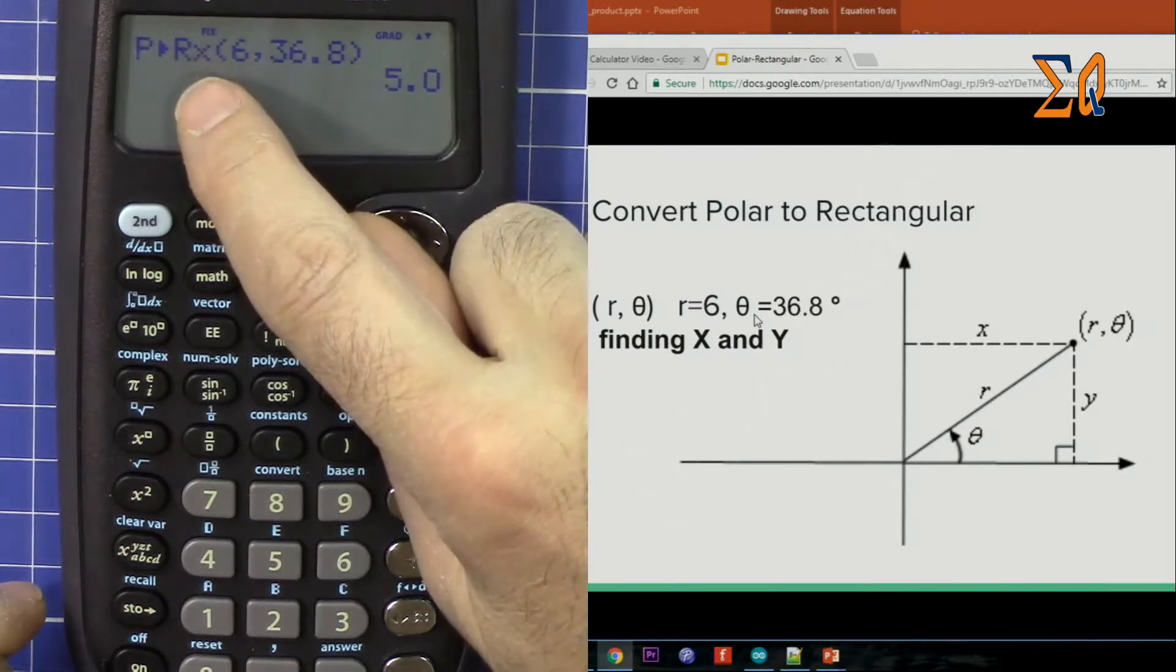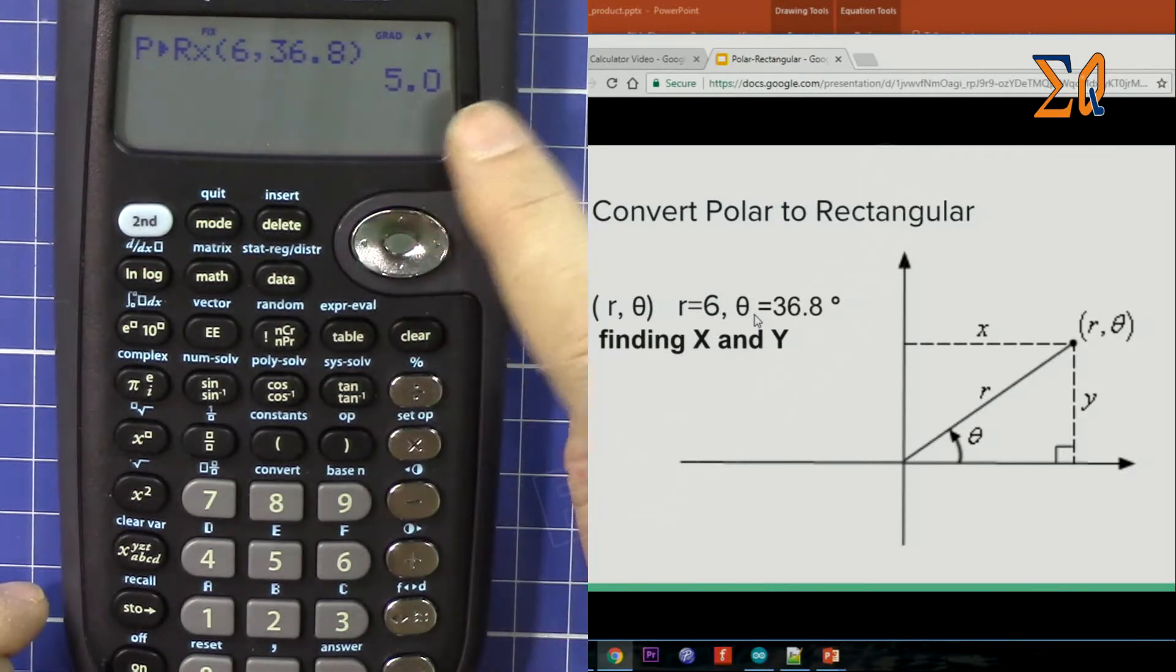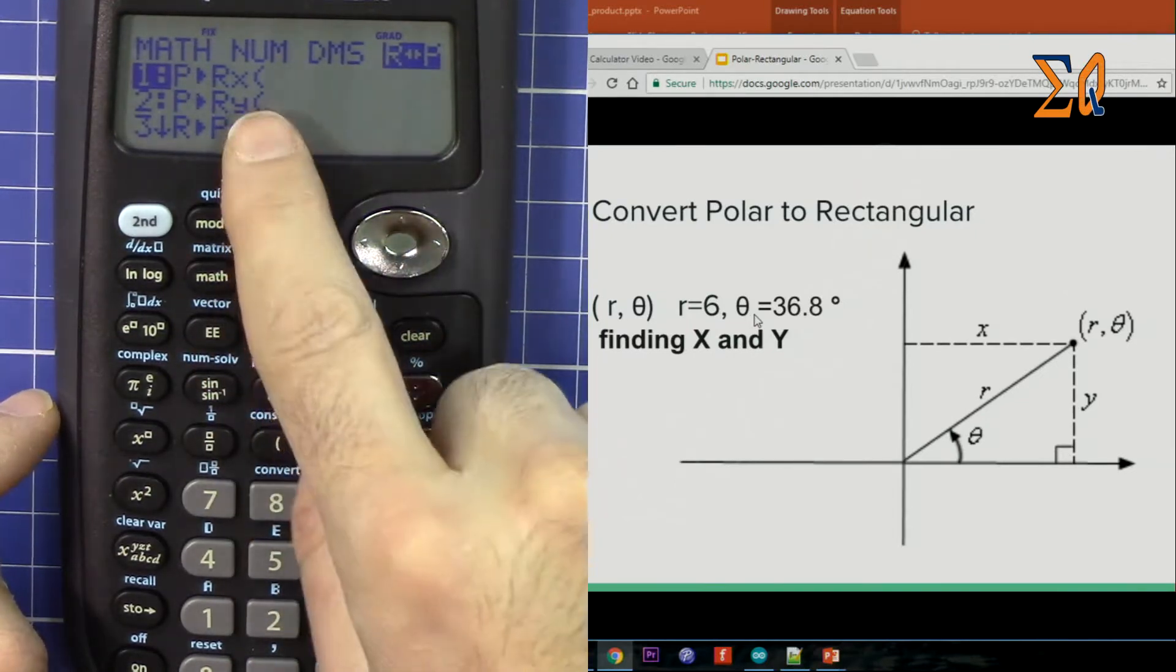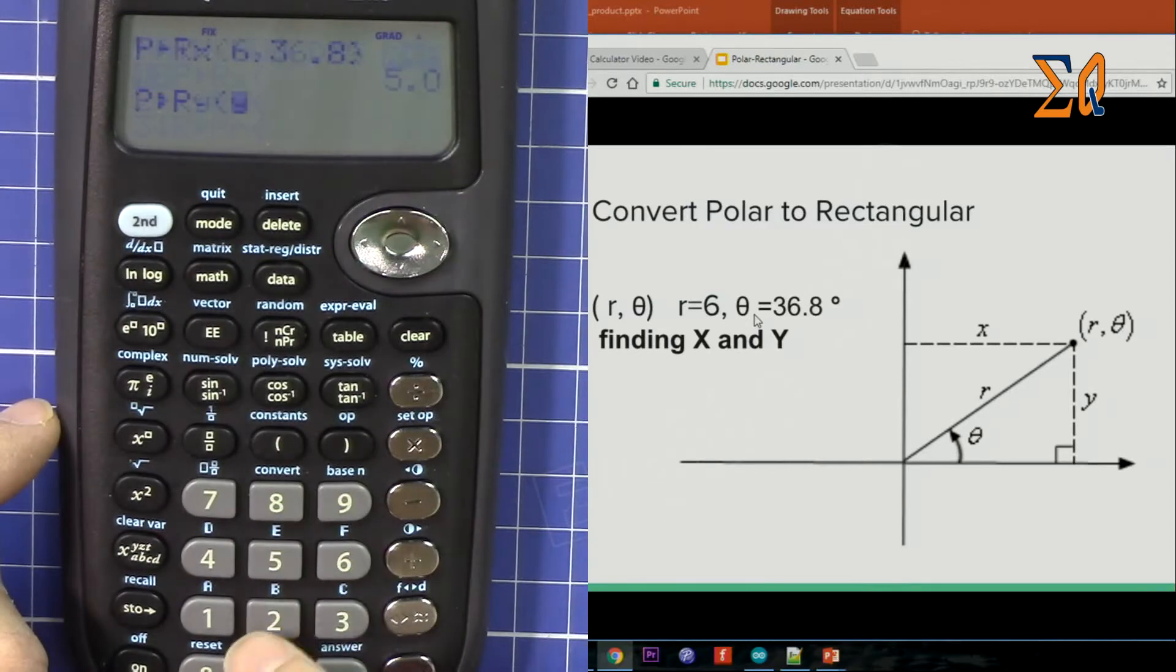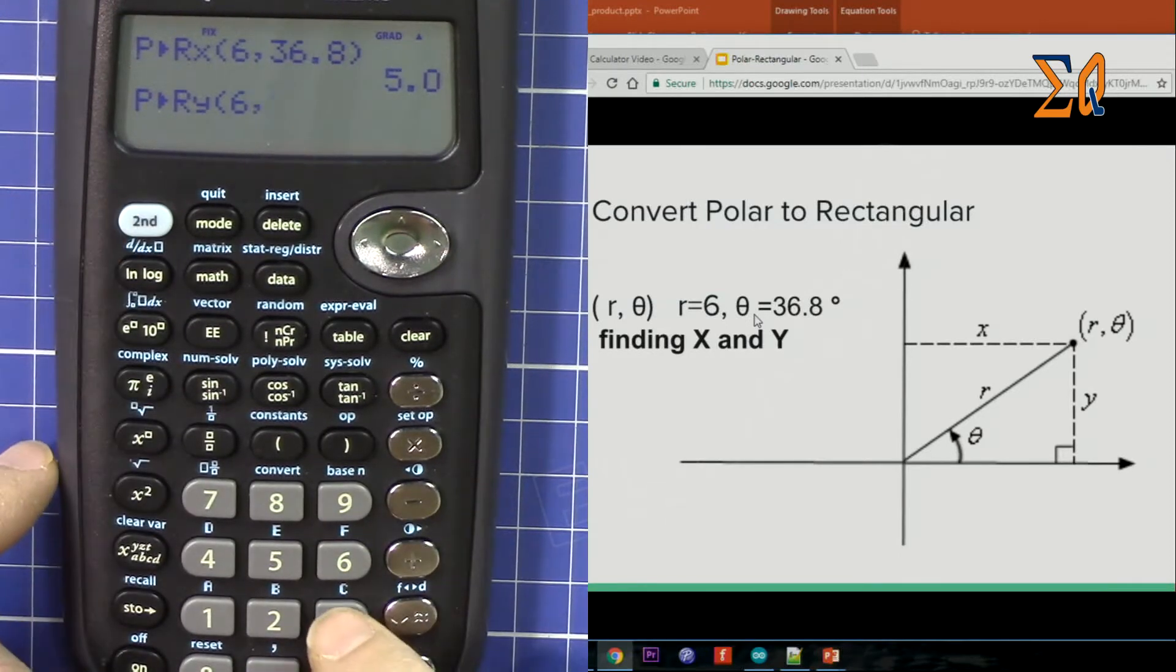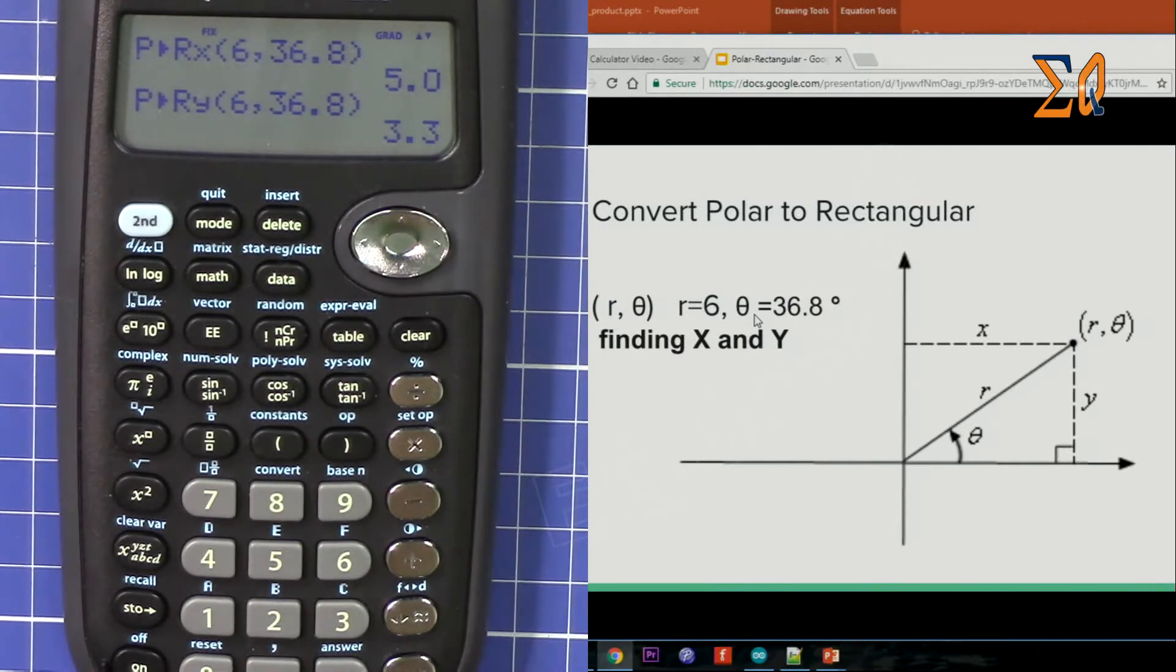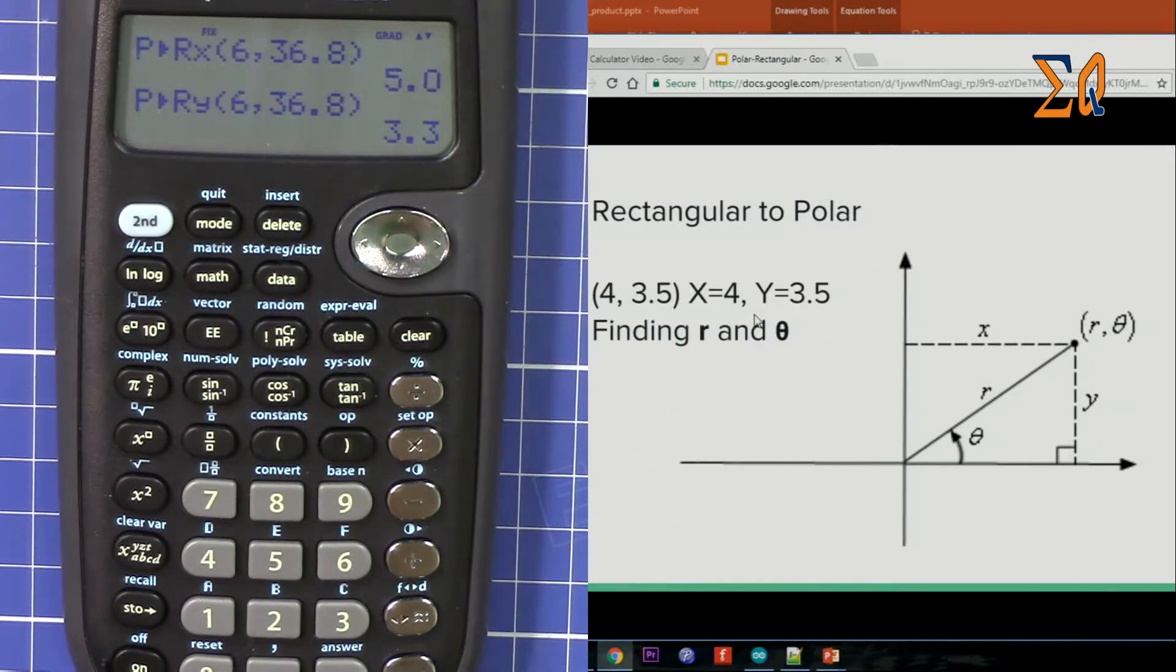If you want to get our Y, go here. Now this time we are pressing 2. So 6, shift, comma, 36.8, so that Y is 3.3. So let's get another example.